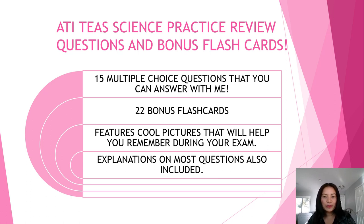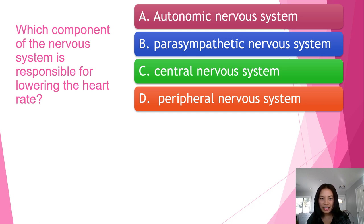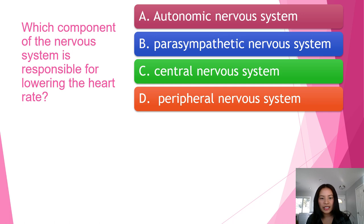The first question: which component of the nervous system is responsible for lowering the heart rate? Is it A) autonomic nervous system, B) parasympathetic nervous system, C) central nervous system, or D) peripheral nervous system? The answer is B, the parasympathetic nervous system, because it releases the hormone acetylcholine to slow the heart rate.